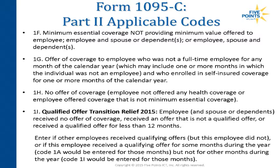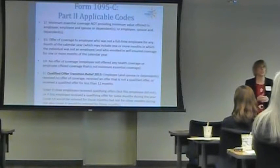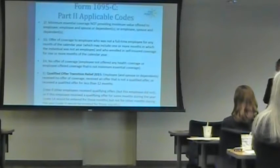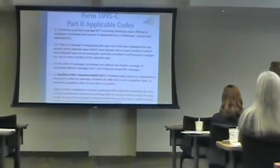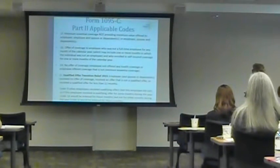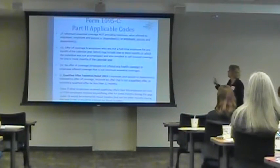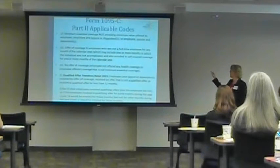1G is for offering coverage to an employee who is not a full-time employee — part-time employees, retirees, co-work people, township trustees, elected officials, or similar individuals. For any month you're covering somebody who's not a full-time employee but they're enrolled in the plan, use 1G.